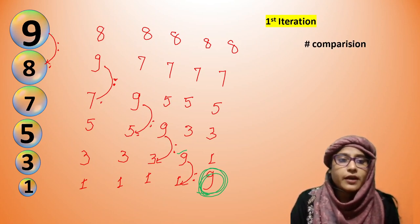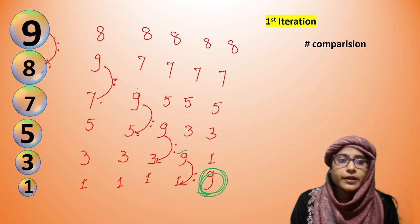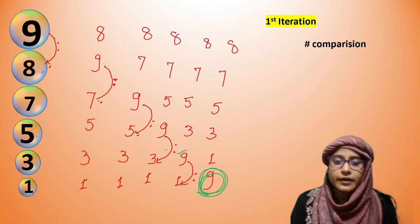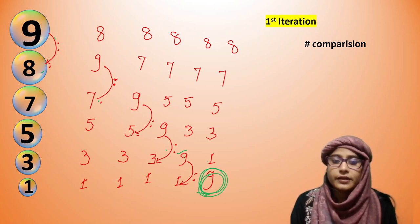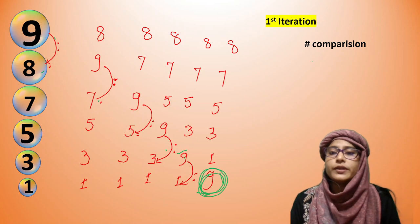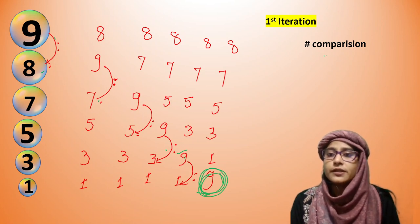Now let's count the number of comparisons. This comparison happened 1 time, then 2 times, 3 times, 4 times, and 5 times — and here it was swapped. So the total number of comparisons is 5.